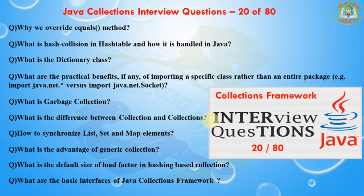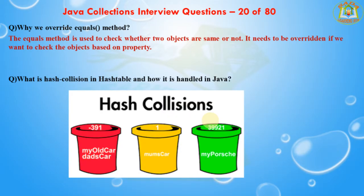The first question is: why do you override the equals method? The equals method is used to check whether two objects are the same or not. It needs to be overridden if we want to check objects based on a property. For example, if Employee is a class that has three data members — ID, name, and salary — and we want to check the equality of an Employee object on the basis of salary, then we need to override the equals method.